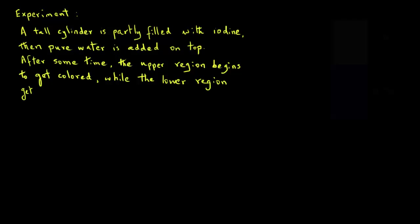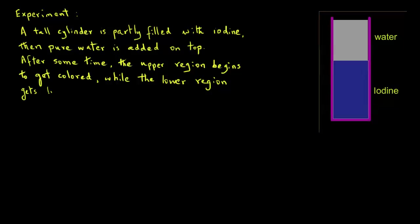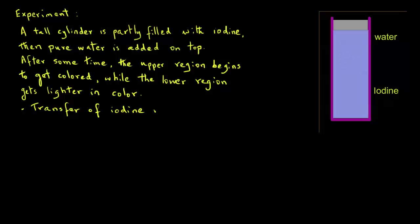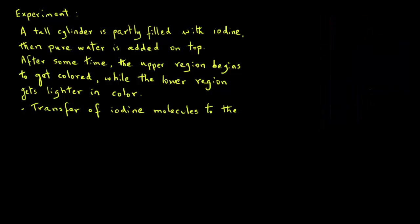While the lower region will get lighter in color. This, as shown in the animation, indicates that there is a transfer of iodine molecules from the bottom to the top. Again, note that diffusion occurs from high concentration region to the low concentration region.